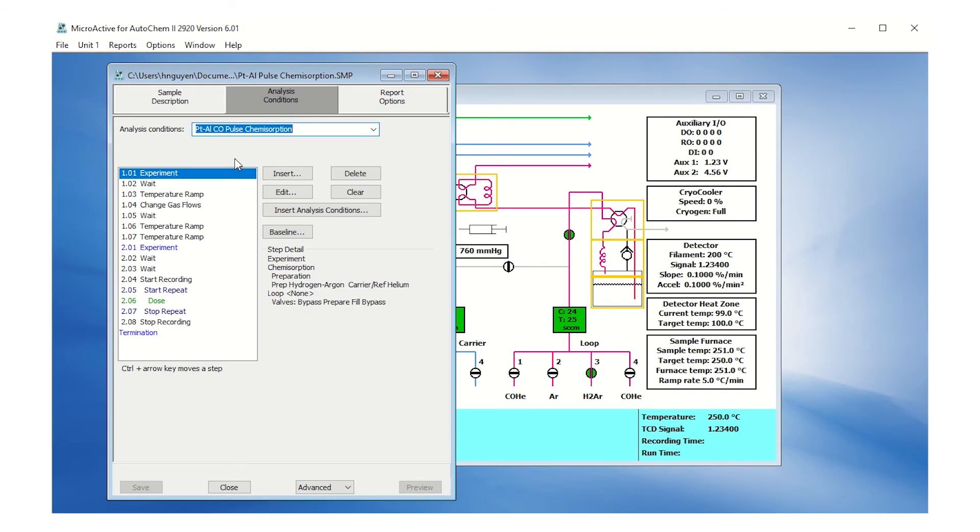This test method will reduce the platinum alumina sample to 400 degrees Celsius with the hydrogen argon flowing first. Helium gas is then used to purge the excess hydrogen at 50 cc per minute for 30 minutes. Then it will begin pulsating carbon monoxide helium at 35 degrees Celsius until saturation.